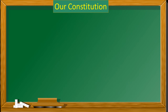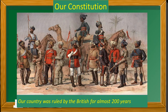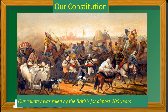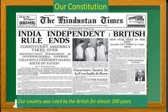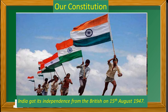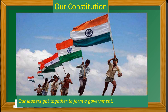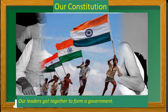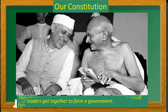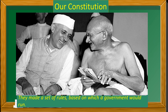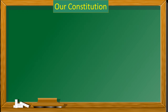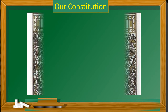Our Constitution. Our country was ruled by the British for almost 200 years. After a long and hard struggle, India got its independence from the British on the 15th of August 1947. Our leaders got together to form a government. One of the first things they did was to make a set of rules, based on which the government would run. This set of rules is known as our Constitution.